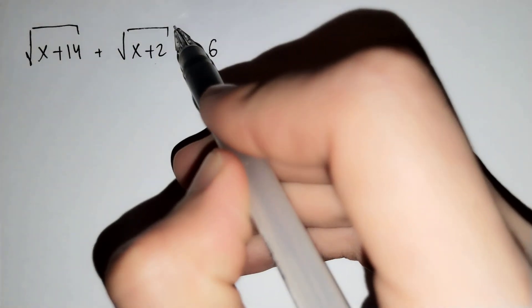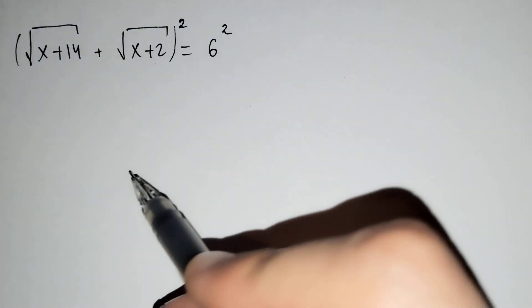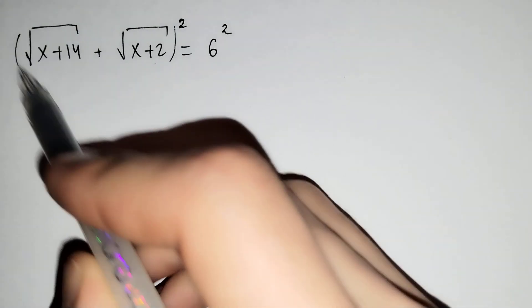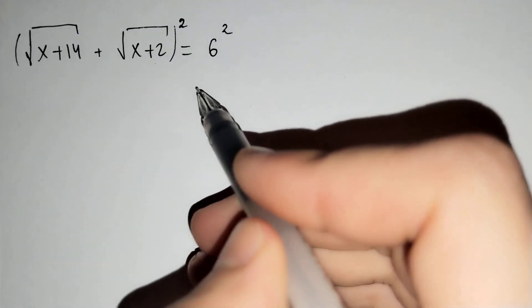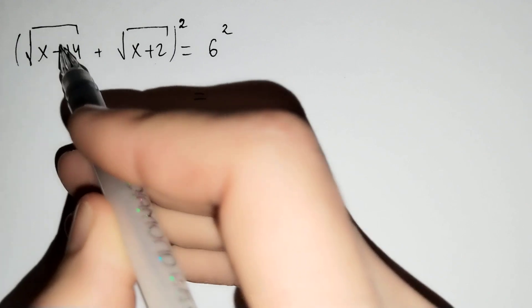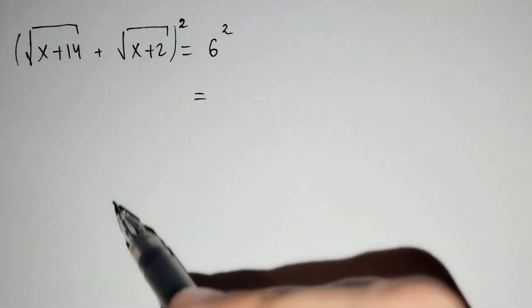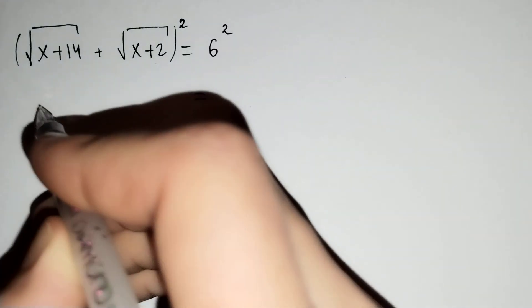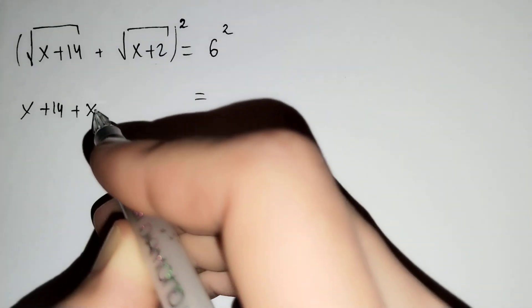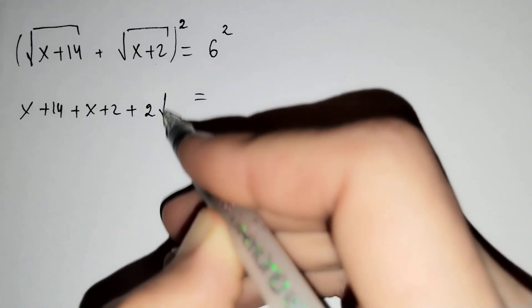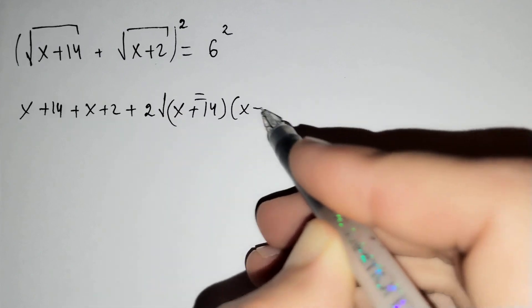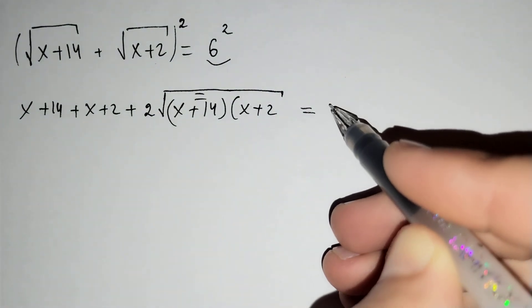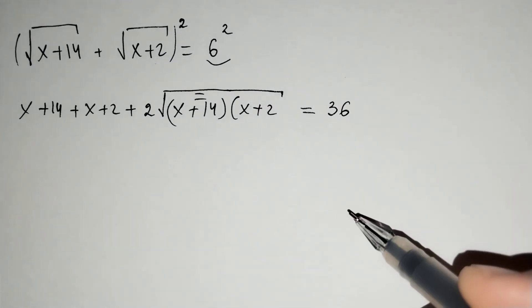Firstly, if we raise both sides to the second power — remember, the square root of x plus 14 plus the square root of x plus 2, all squared, equals 6 squared. You know the formula: (a + b)² equals a² plus b² plus 2ab. Applying this, we get x plus 14 plus x plus 2 plus 2 times the square root of (x plus 14)(x plus 2) equals 6 squared.